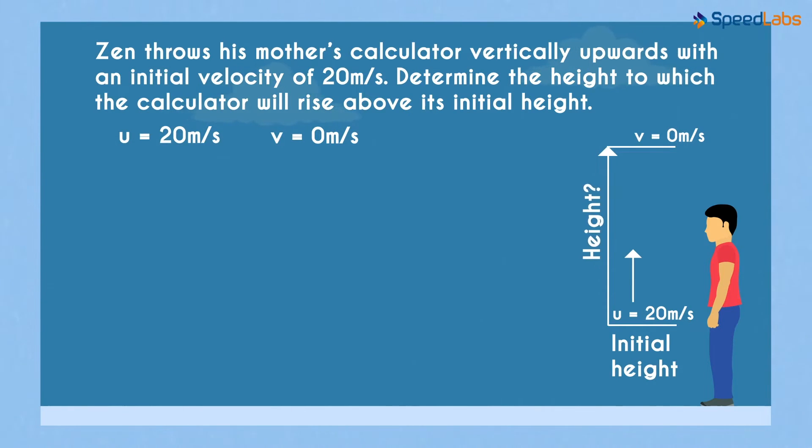We've been asked to find the height at which it reaches before it begins its descent. Now which equation of motion do you think will give us the value of the height? It will be the third one: v squared equals u squared plus 2as.